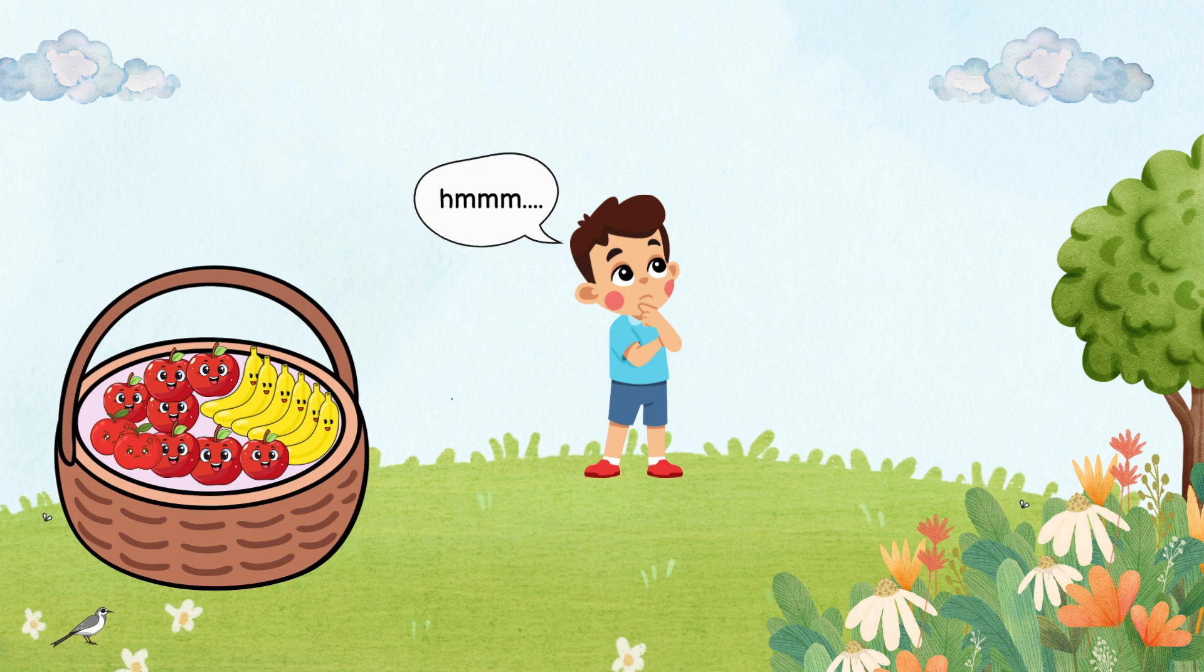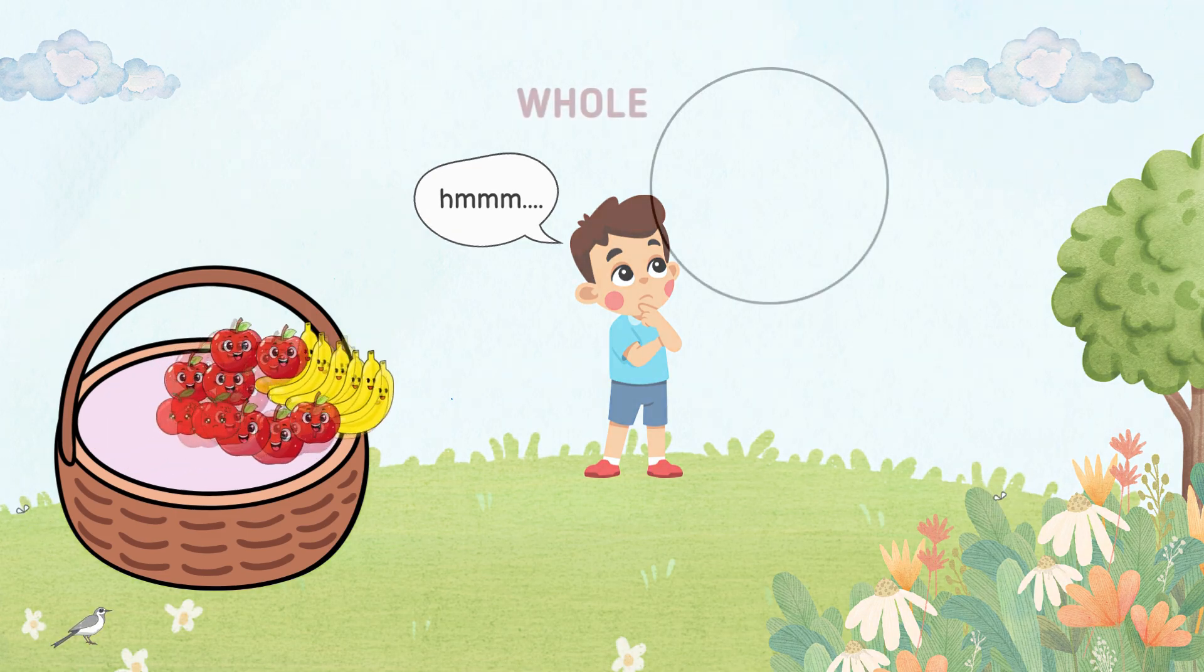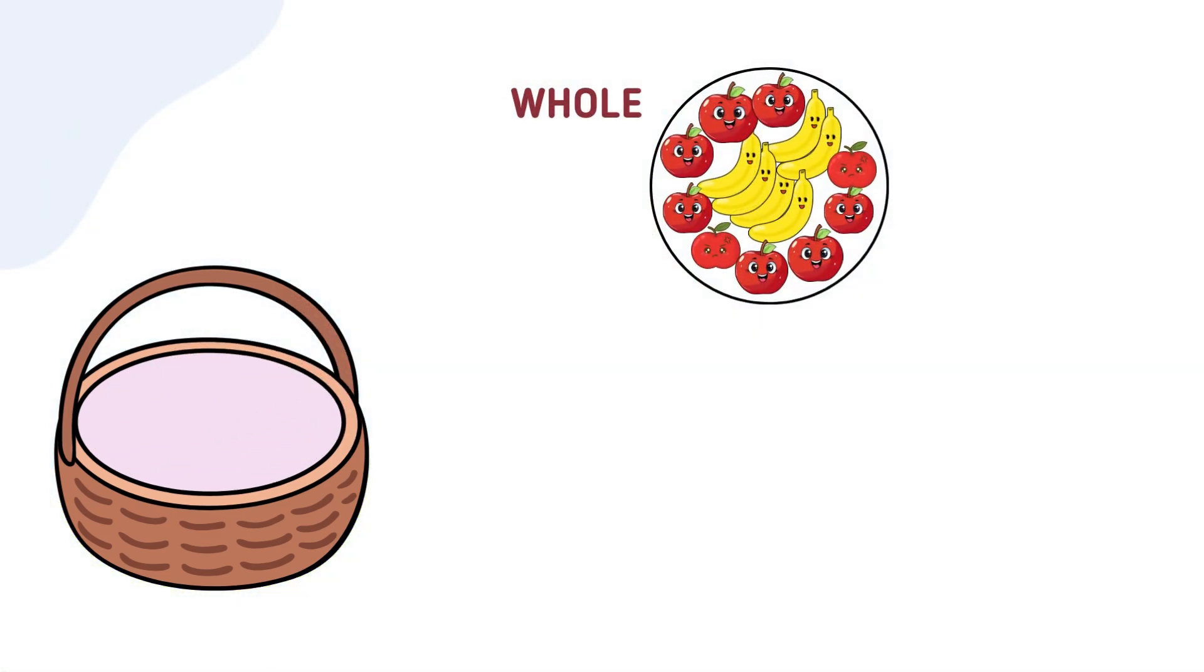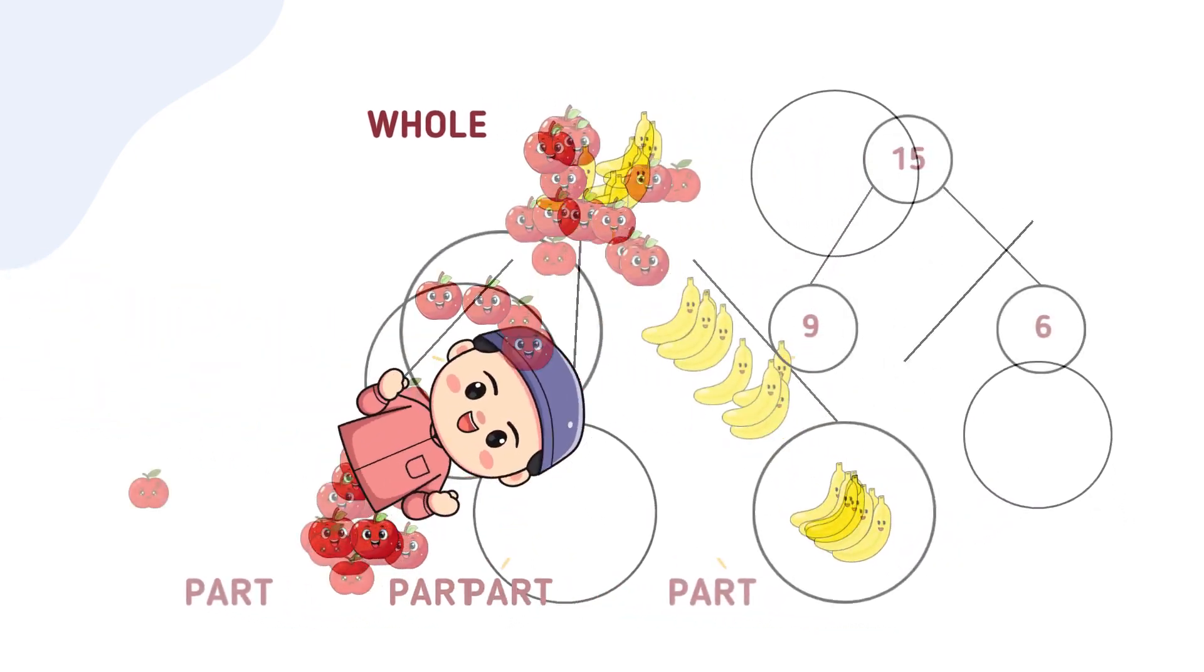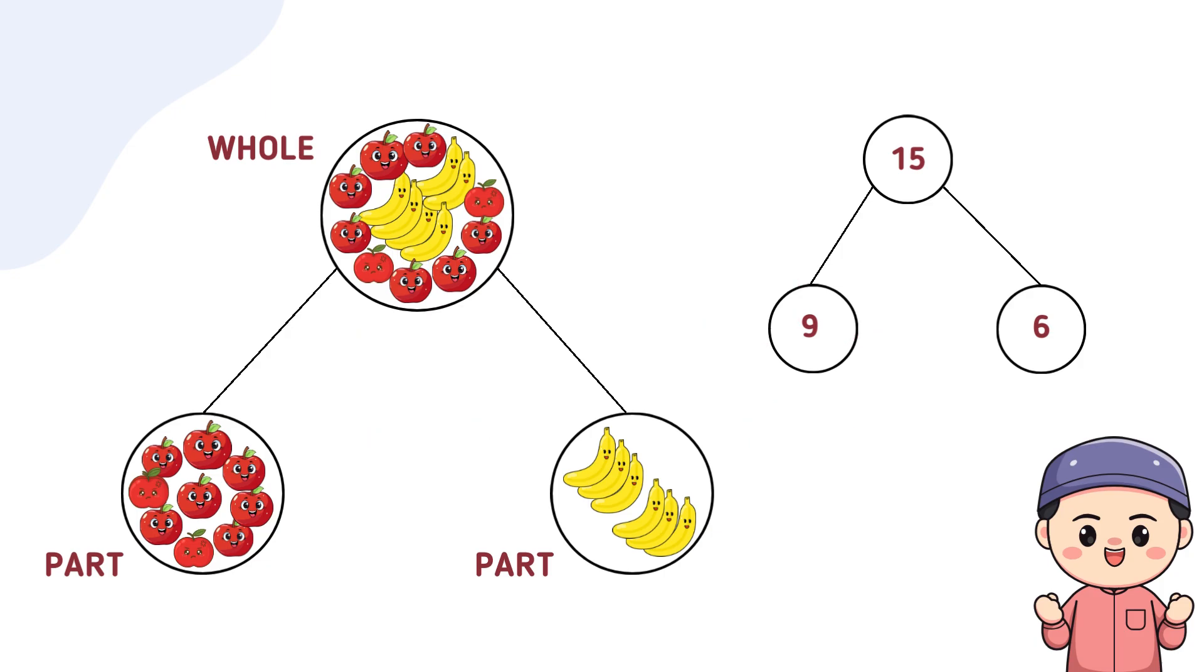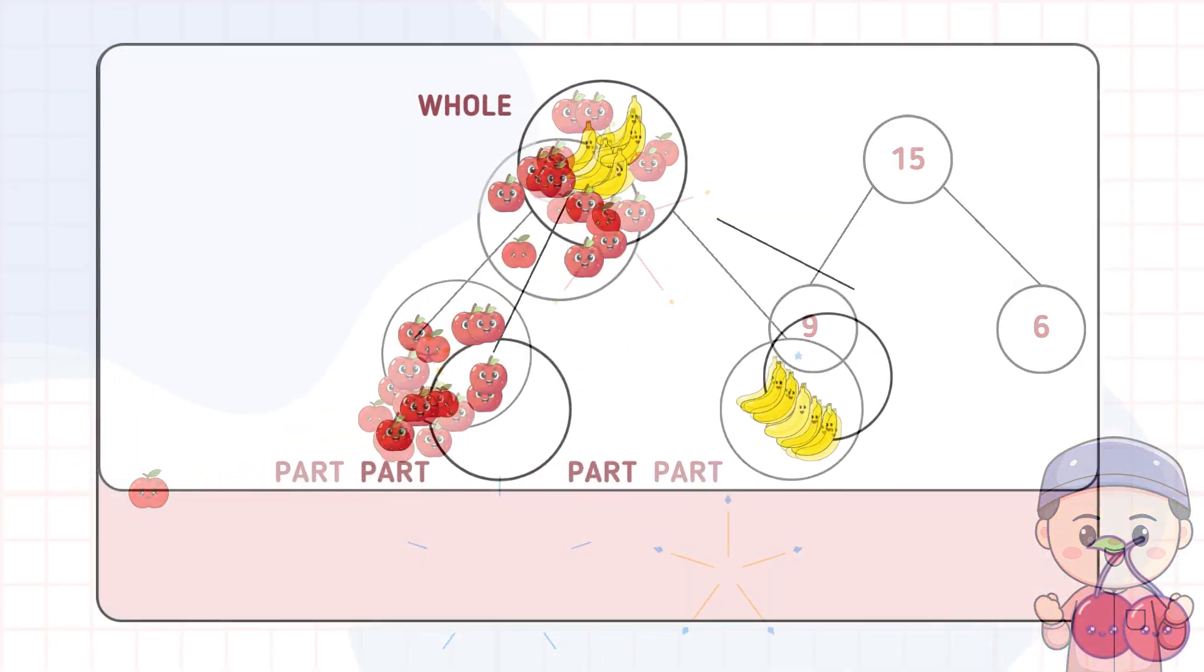Did you figure it out? Let's check your answer together. The whole is 15 fruits and the parts are 9 apples and 6 bananas. Even though apples and bananas look different, they come together perfectly to complete the basket of fruit. Great work.